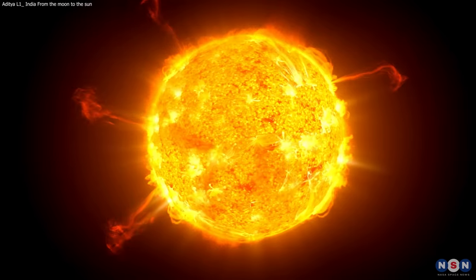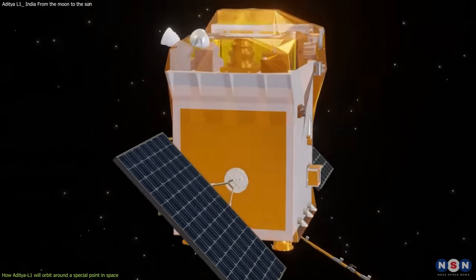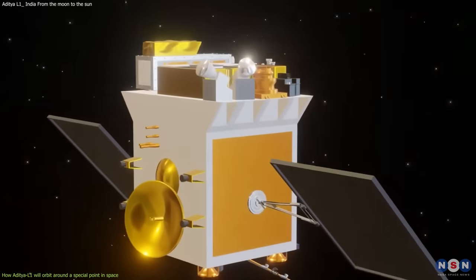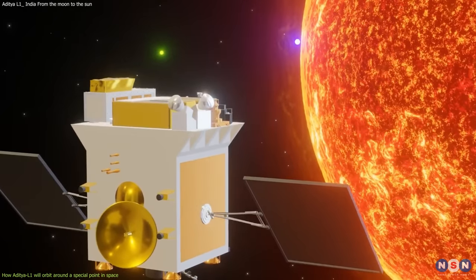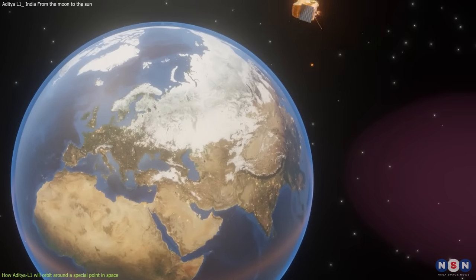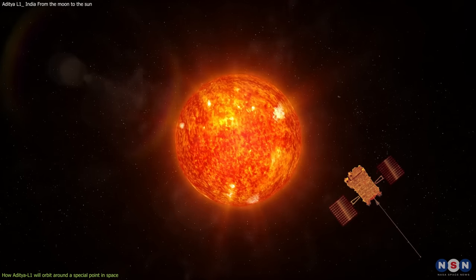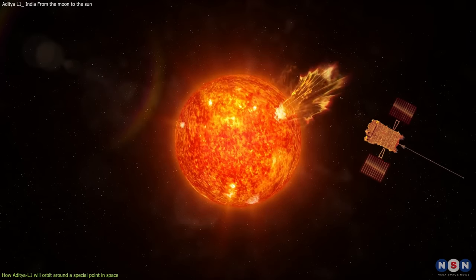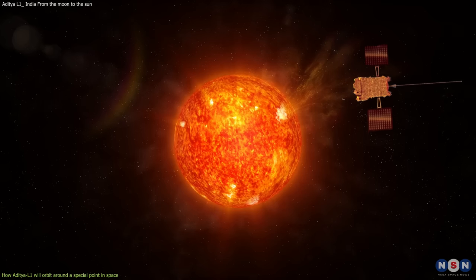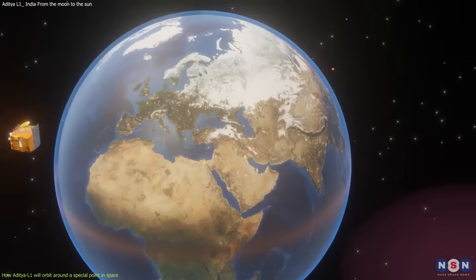To observe the Sun's outermost layers, Aditya L1 needs to have a continuous view of the Sun without any interference from Earth or the Moon. This means that it cannot orbit around Earth or the Moon, but it also cannot orbit around the Sun directly, because that would require too much fuel and energy. So where can Aditya L1 go?